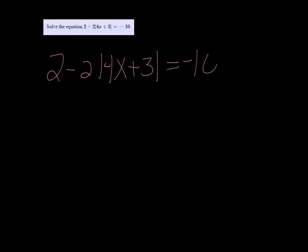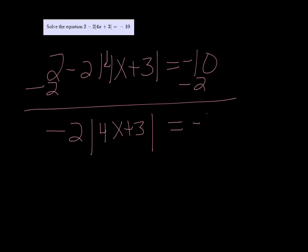Alright, so I am going to subtract 2 on both sides. And then I get negative 2 times the absolute value of 4x plus 3 equals negative 12.